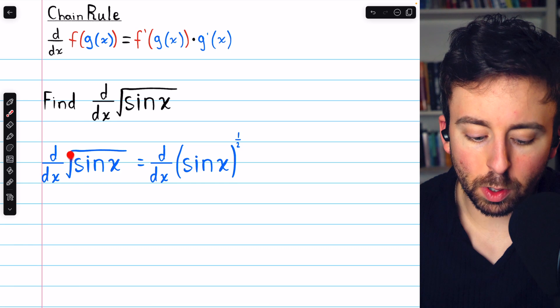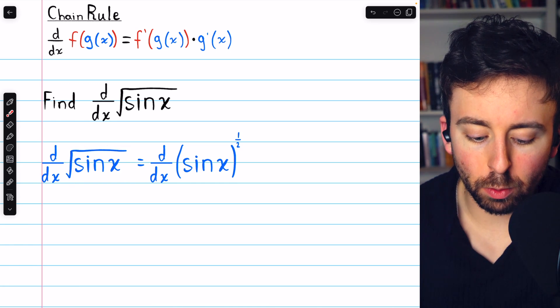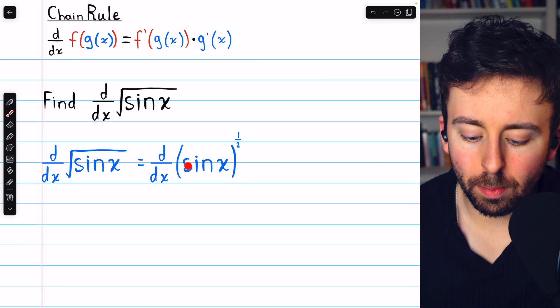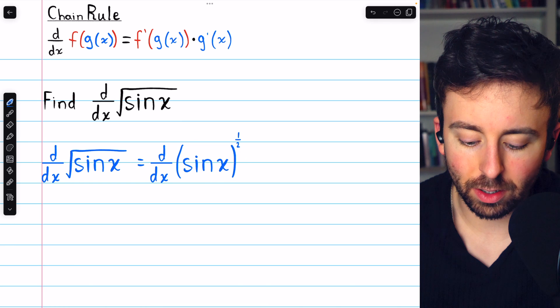First, you may find it helpful to rewrite the radical as a rational power. The square root of sine x is the same as sine x to the power of one-half. With that in mind, let's start taking the derivative.